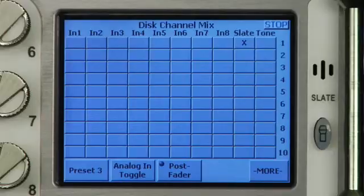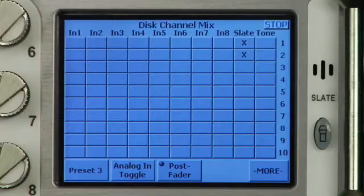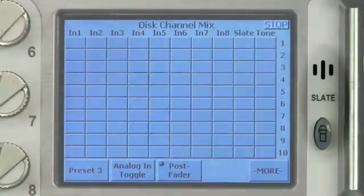Let's start by routing the slate mic to disk track 1 by pressing the box immediately below the slate to place an X. This X indicates that the slate mic is now routed to disk track 1. If we want to route slate to disk track 2, all we have to do is place an X connecting the slate to disk track 2. Note that the slate mic is special in that it is activated by pressing the slate button on the front of the DIVA.